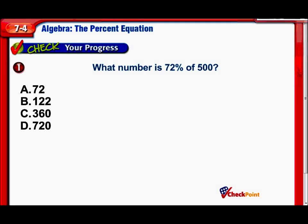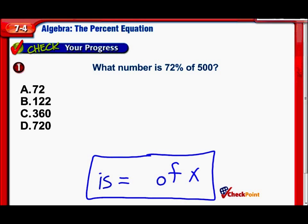So here's the first one. What number is 72% of 500? There's a couple things I need you to remember for this particular lesson in the percent equation. Is, whenever you see the word is, that's going to mean the equals sign. Of, that's going to be multiplication. If you can remember those two items, you're really going to have little to no trouble setting up these percent equations.